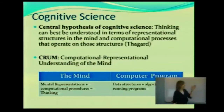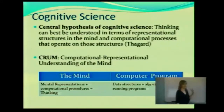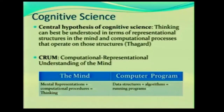Cognitive science has a central hypothesis, and it has to do with thinking. Why do I keep mentioning this? What do we do as humans? We think. When we are designing a software system, are we thinking about how humans think? Hopefully we are — we should. Most of the time, does that happen? Probably not so much.